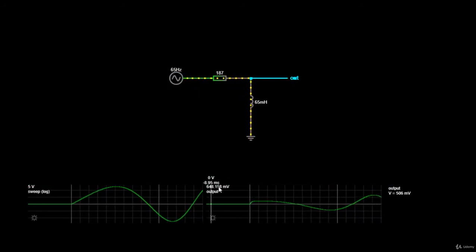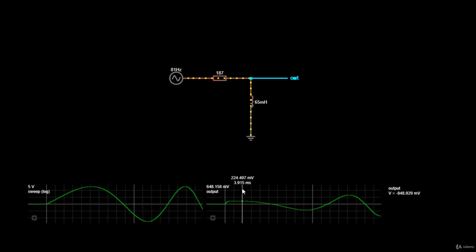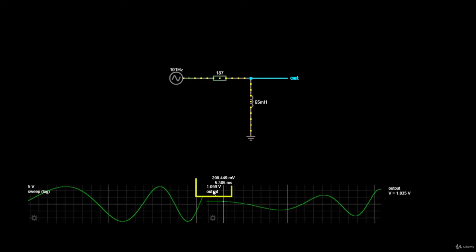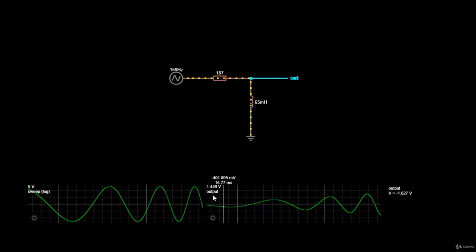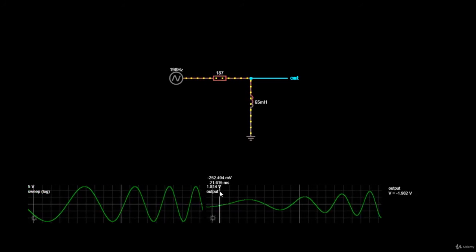How do we know it's attenuated? Well, the input voltage is a constant 5V, and the output voltage is less than 5V. As a result, the output voltage is attenuated by a certain amount.